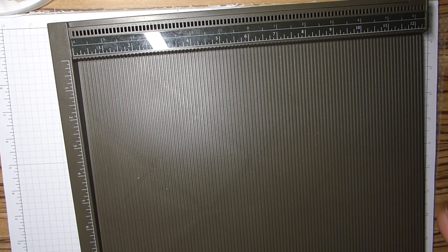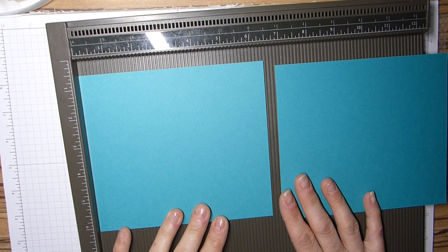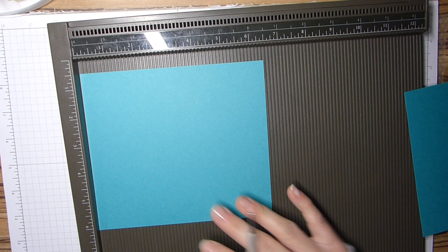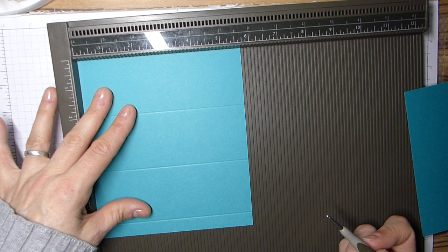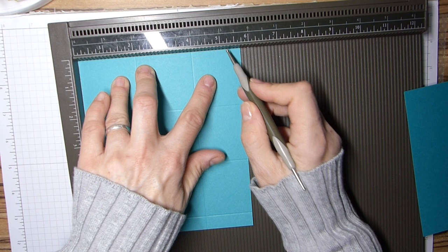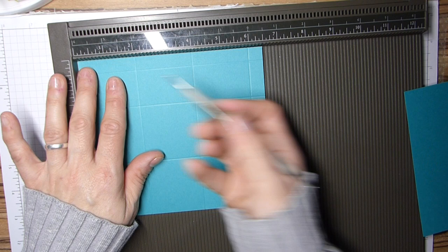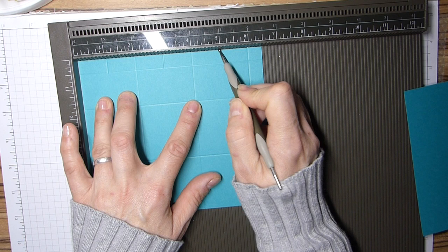To start off, you're going to need two sheets of cardstock that are five and three quarters by six and a half inches. We are going to score on the long side at two, four, and six. Then we're going to rotate and score the short side at two, four, and five and a quarter. Then rotate back again and we're going to mark these top sections at one, three, and five.